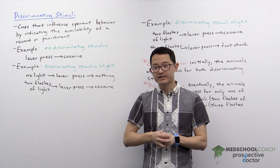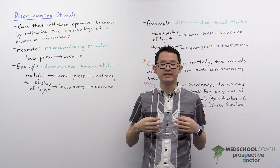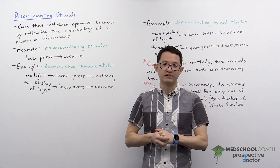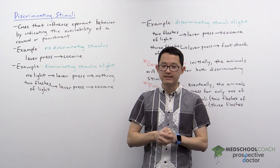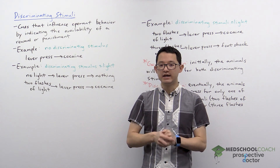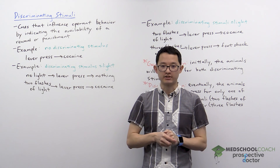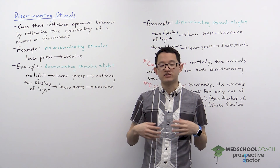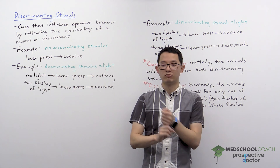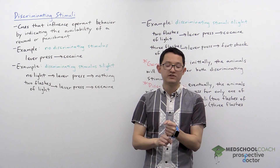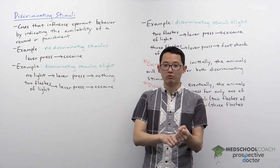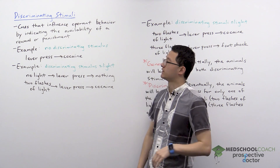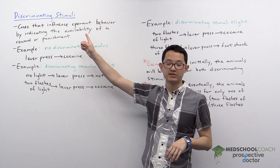These examples are great for understanding the general concepts behind operant conditioning, but for the MCAT, it's also important to understand some of the actual studies that are used to demonstrate these ideas. Often, we're looking at animal models. For example, you might have a rat and you want the rat to press a lever for a reward, such as cocaine. We're going to use this system to illustrate the idea behind discriminating stimuli.